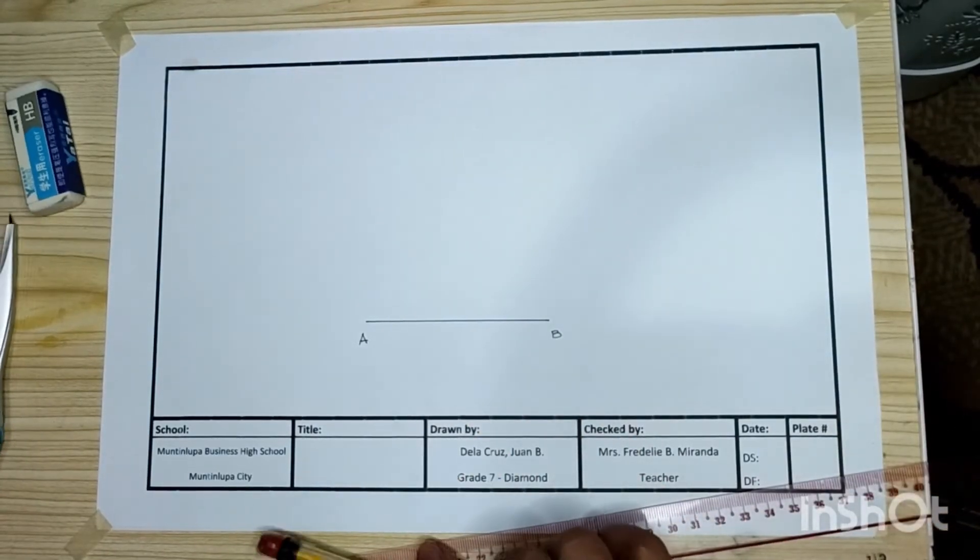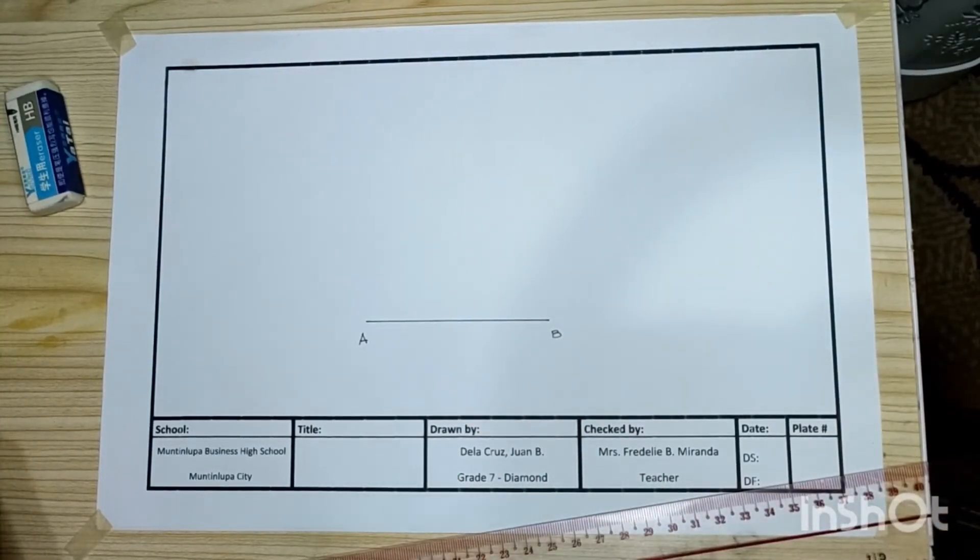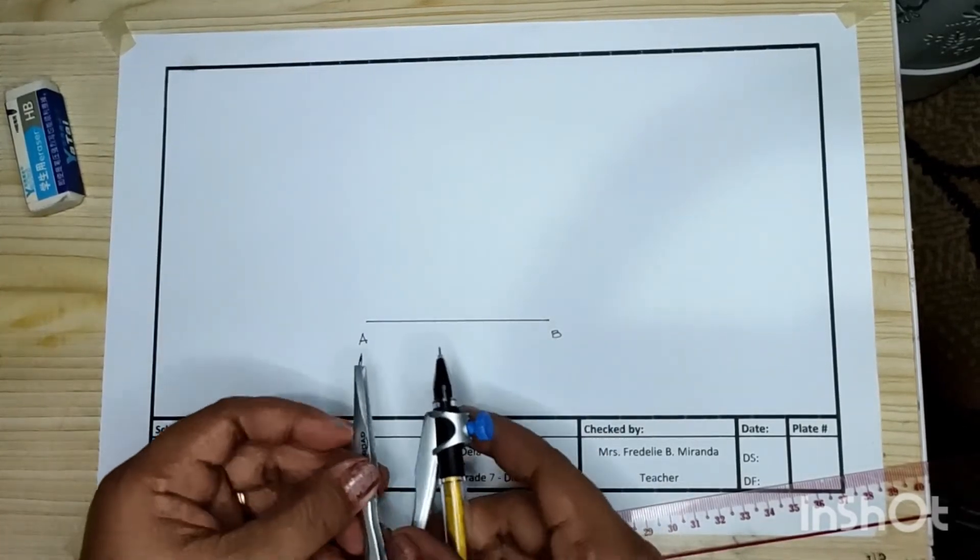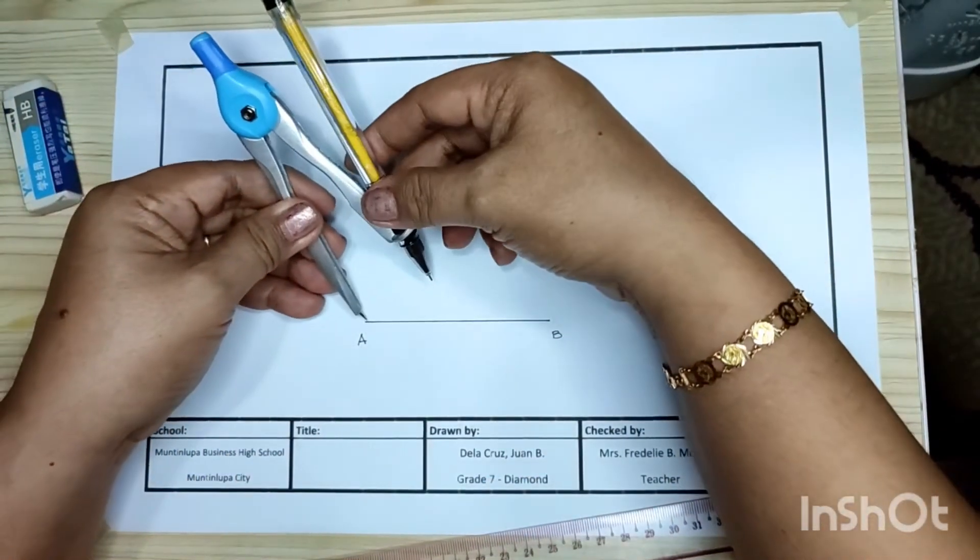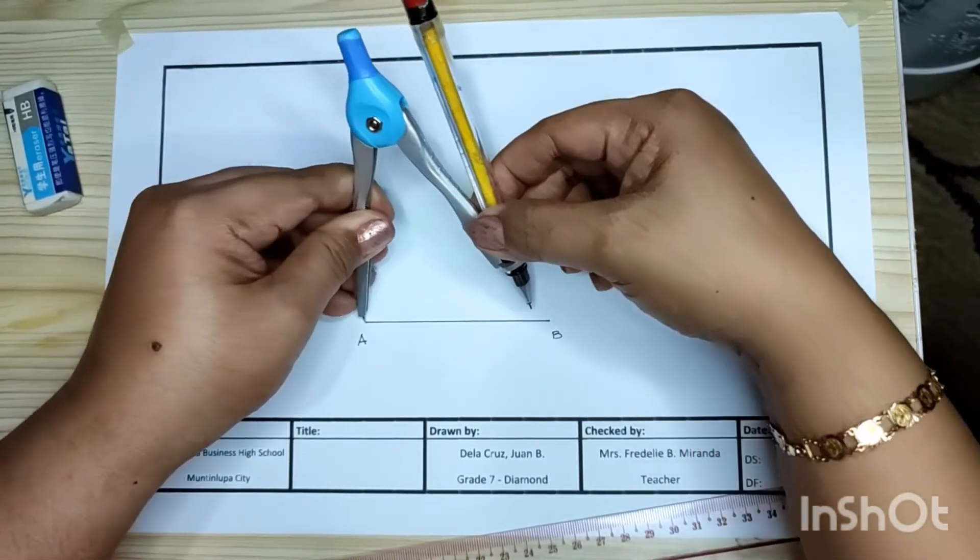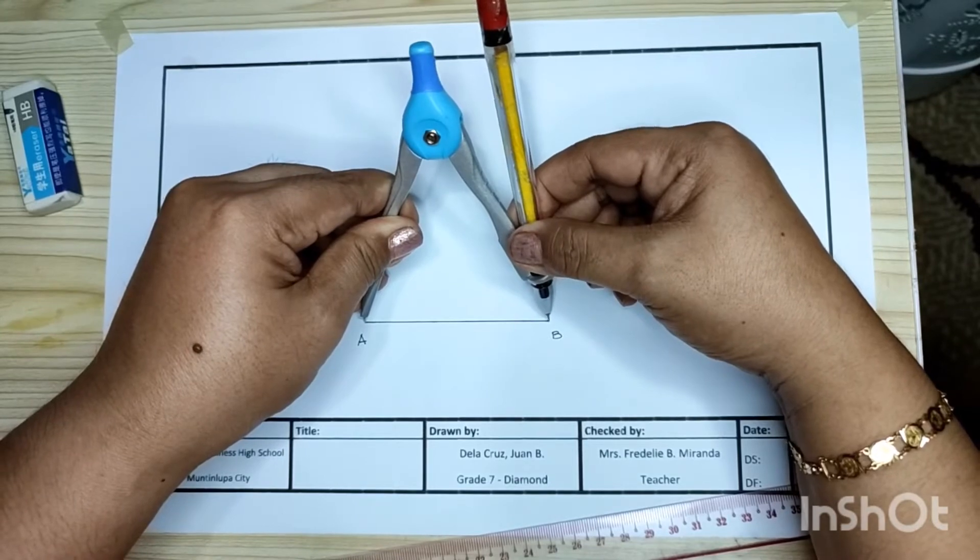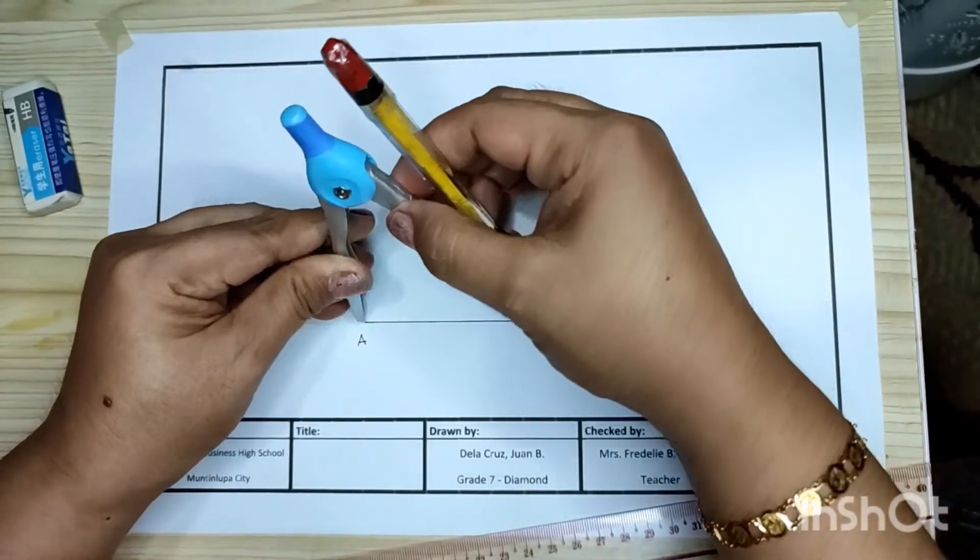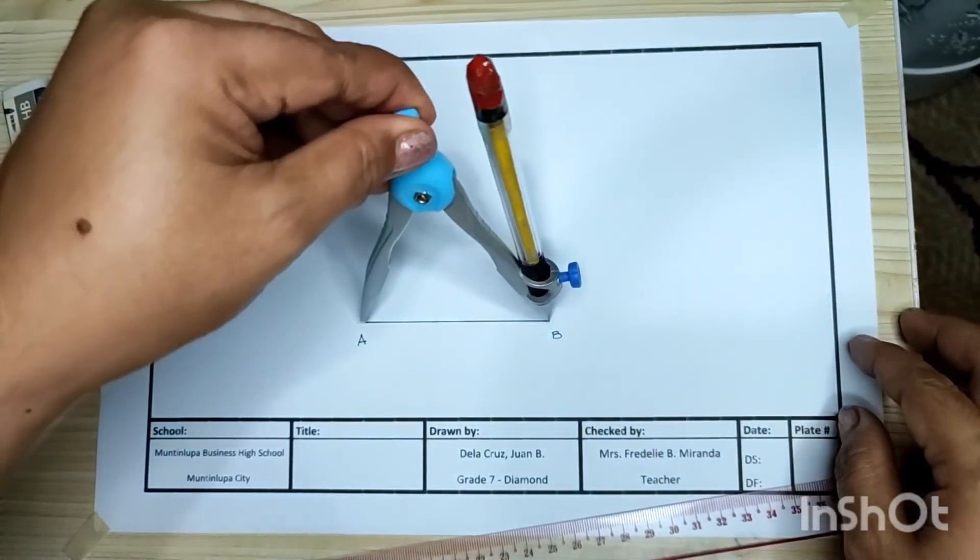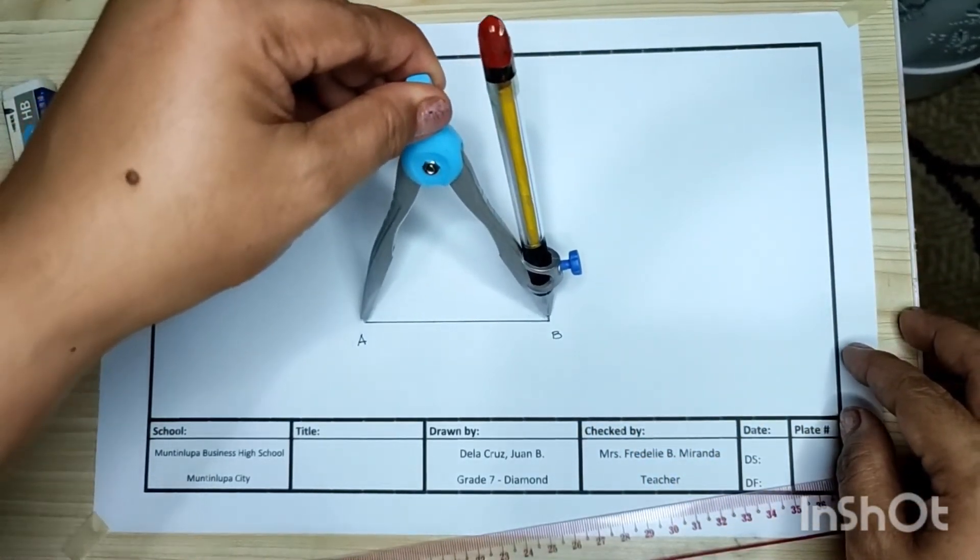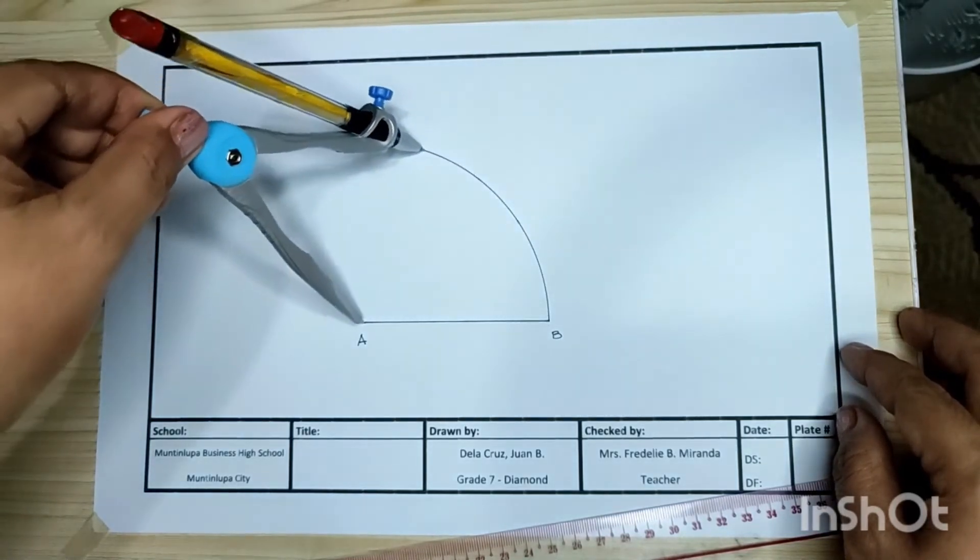Then get your drawing compass. Set your compass at point A, then adjust your compass to point B. Then strike an arc, strike from point B to the upper portion of your drawing paper.